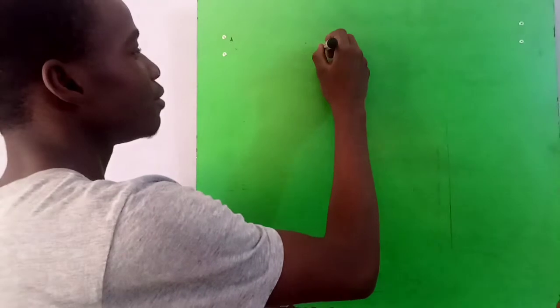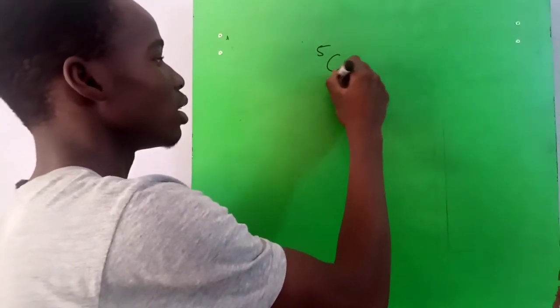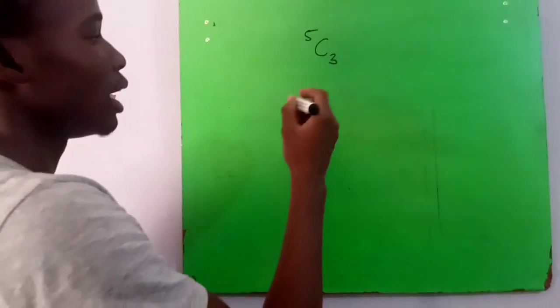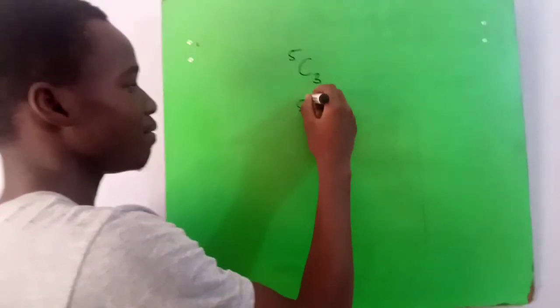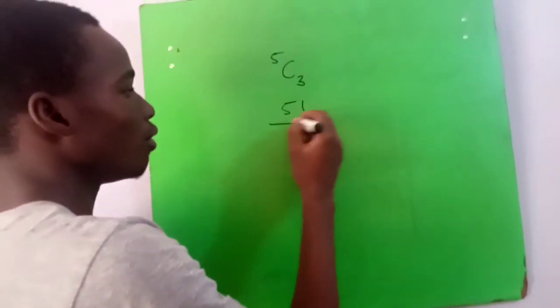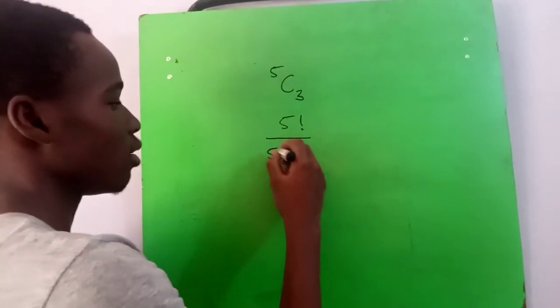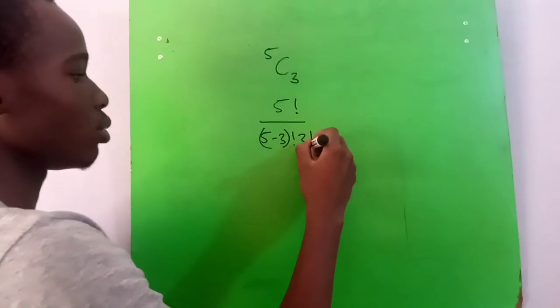Here we have 5 combination 3. How do we go about it? So 5 combination 3 means that 5 factorial over (5 minus 3) factorial times 3 factorial.